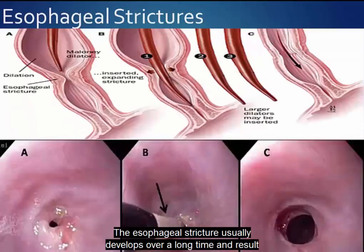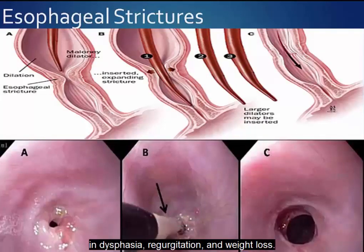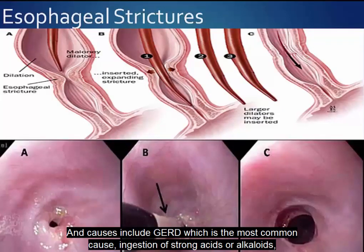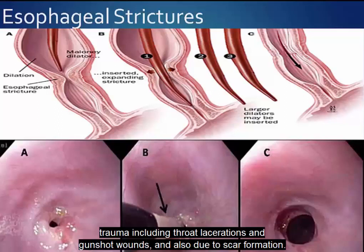Esophageal strictures usually develop over a long time and result in dysphagia, regurgitation, and weight loss. Causes include GERD, which is the most common cause, ingestion of strong acids or alkalis, trauma including throat lacerations and gunshot wounds, and scar formation.